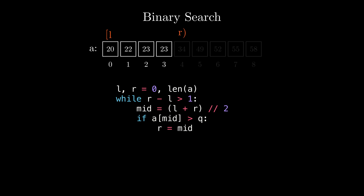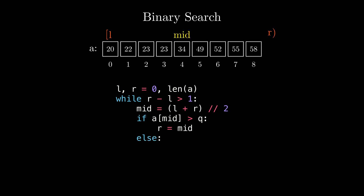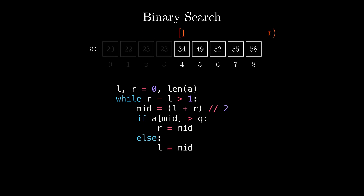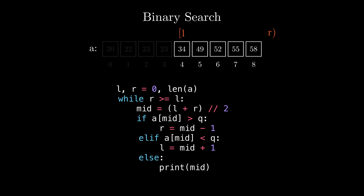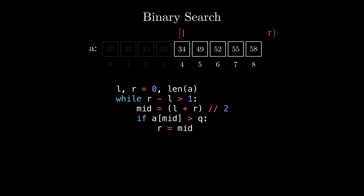Notice how we assign R to mid — since R is exclusive and we just saw that mid cannot be part of the answer as the element is larger than the query, we can assign R to mid. If both L and R endpoints were inclusive, we would need to set R to mid-1 instead. Otherwise, if the middle element is smaller than or equal to the query number, we set L to be equal to mid. If L and R were both inclusive, we would have to do another check to see if the middle element was equal to the query and set L to mid+1 if it wasn't, modifying the while loop condition as well. So using one inclusive and one exclusive endpoint avoids a lot of boilerplate code.